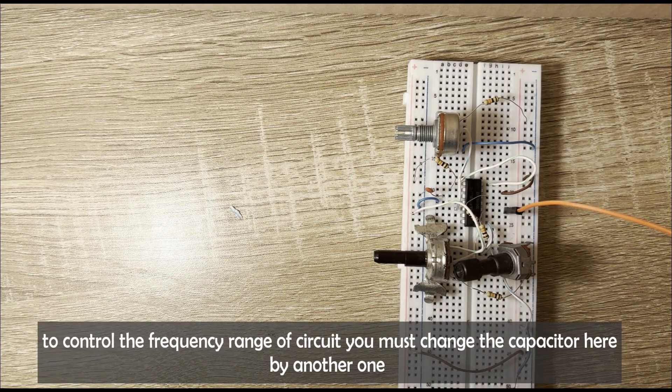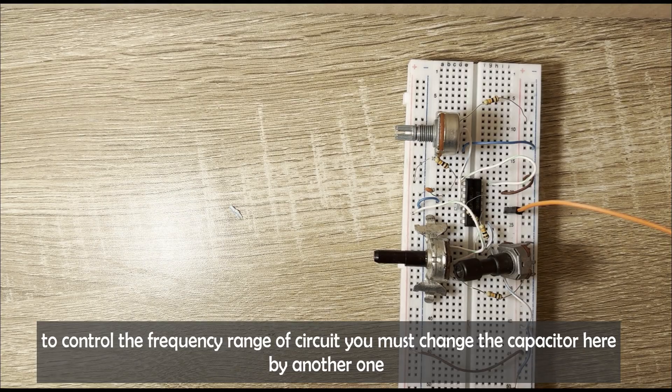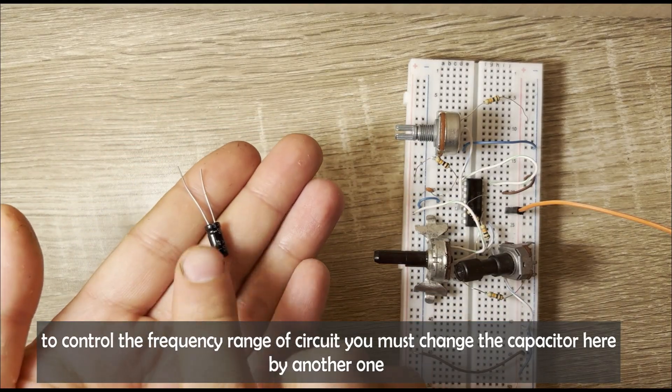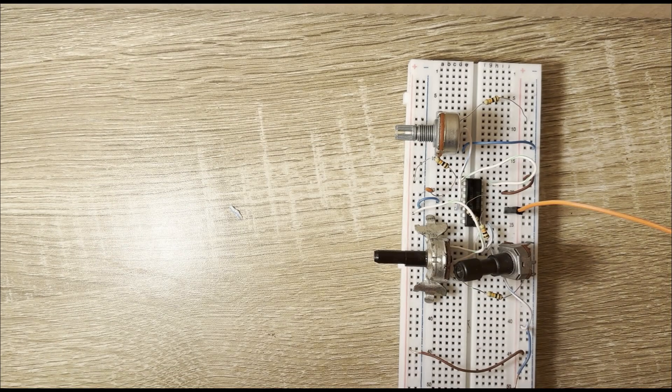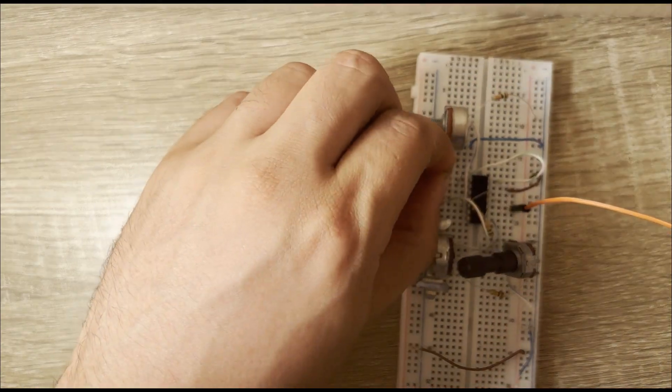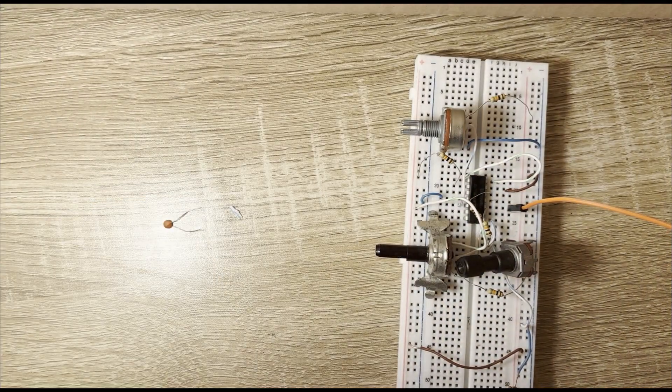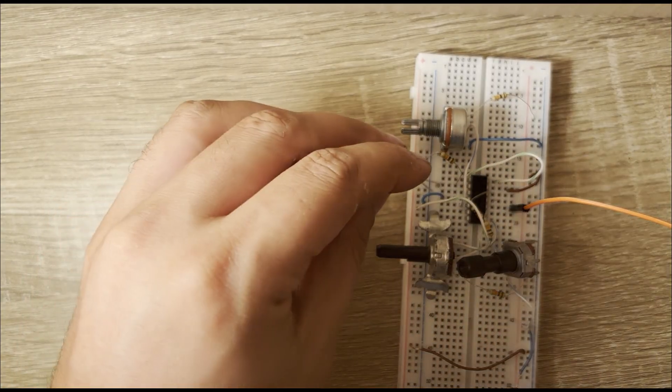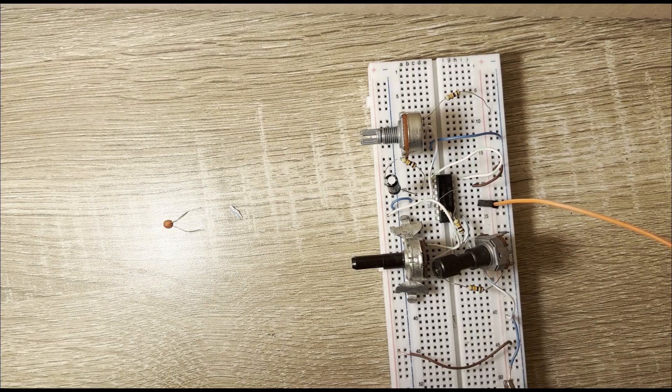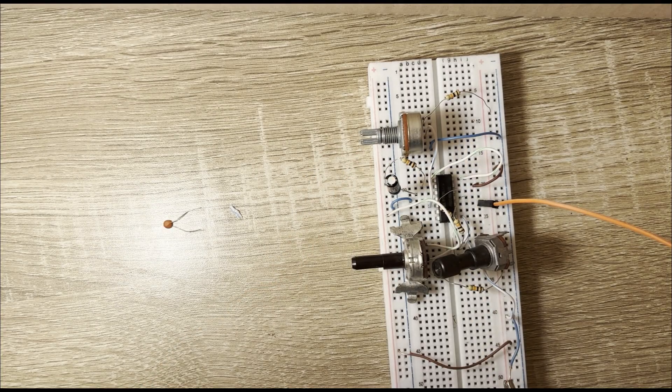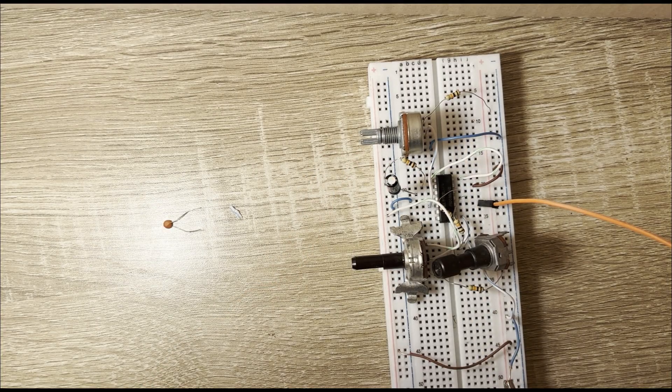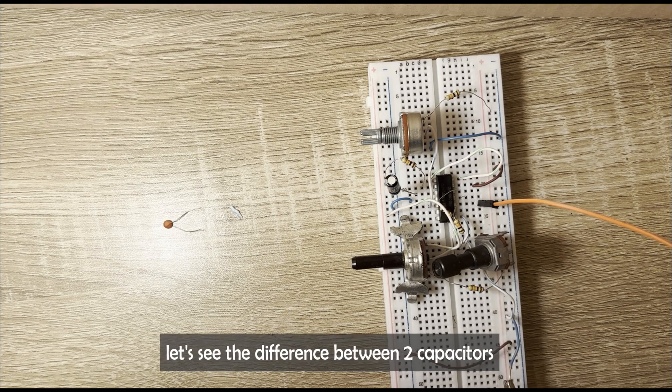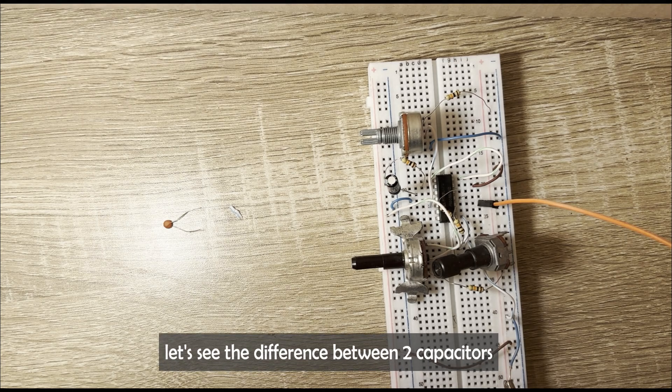To control the frequency range of the circuit, you must change the capacitor here by another one. In our case, we will use a 2 microfarad capacitor. Let's see the difference between the two capacitors.